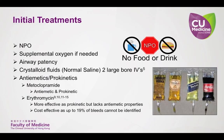It has been reported that in 3 to 19% of upper GI bleeds, no obvious source of bleeding can be identified. This may in part be related to blood and clots impairing endoscopic visualization. The prokinetic erythromycin is most commonly used at a dose of 250 milligrams, infused 30 to 120 minutes prior to upper GI endoscopy. A cost-effectiveness analysis found that pre-endoscopy erythromycin infusion was cost effective, primarily due to a reduction in the need for second-look endoscopies.